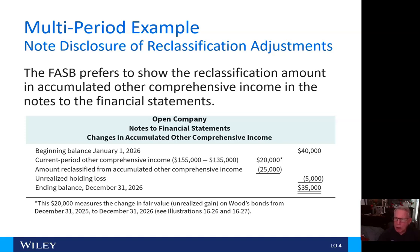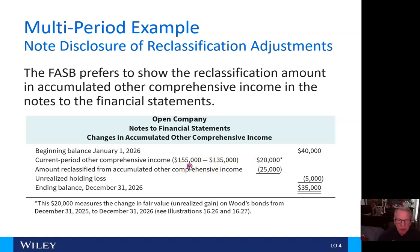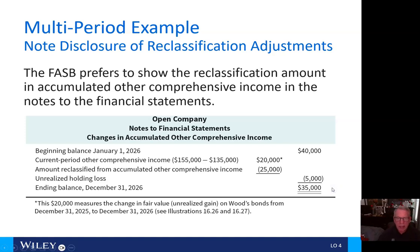A note disclosure of reclassification adjustments is important. The FASB prefers to show reclassification amounts and accumulated other comprehensive income in the notes to financial statements. Here's an example: the beginning balance on January 1, 2026, plus current period other comprehensive income of $20,000 (the difference between $155,000 and $135,000), less the $25,000 amount reclassified from accumulated other comprehensive income representing an unrealized holding loss, gives an ending balance of $35,000 at the end of 2026.